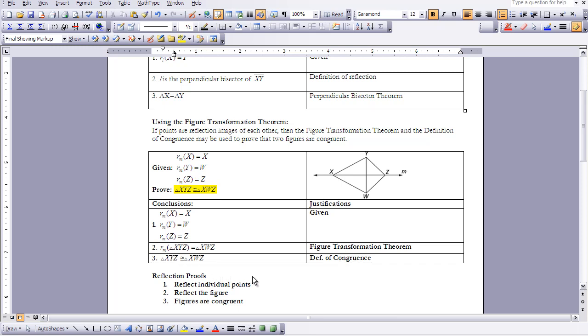You will be exposed to many different examples of proofs proving that figures are congruent to each other using reflections. The process is: first, reflect the individual points; then reflect the figure; and then say the figures are congruent to each other.